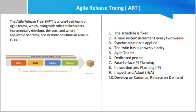There are a few key points. First, the schedule is fixed — the train departs the station on a known, reliable schedule as determined by the chosen Program Increment, or PI, cadence. If a feature misses a timed departure and does not get planned into the current PI, it can catch the next one. Second, a new system increment is delivered every two weeks.